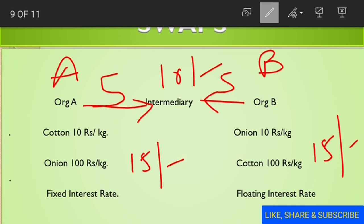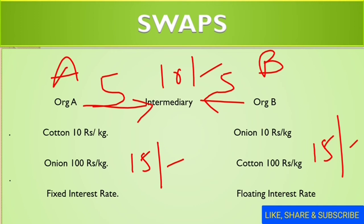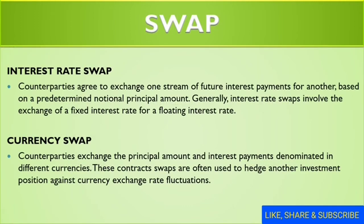Swaps are of two types: interest rate swap and currency swap. In an interest rate swap, counterparties agree to exchange one stream of future interest payments for another, based on a pre-determined notional principal amount. Generally, interest rate swaps involve the exchange of a fixed interest rate with a floating interest rate.